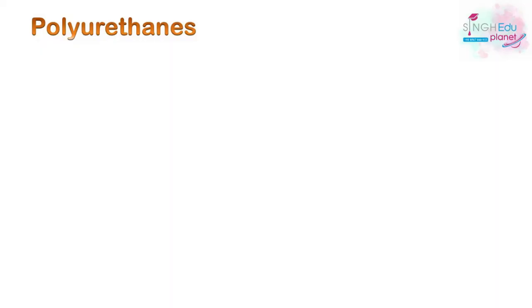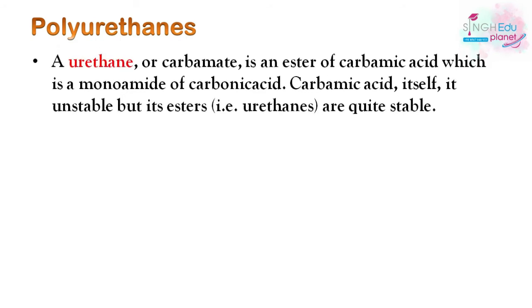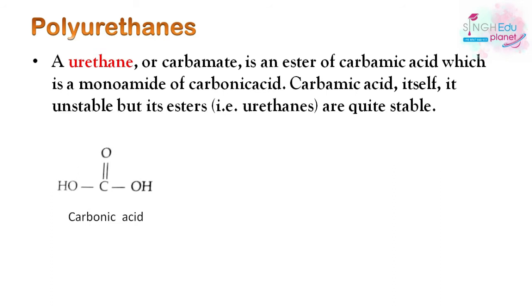The last topic is polyurethanes, which is an important topic. Urethane or carbamate is an ester of carbamic acid, which is the monoamide of carbonic acid. Carbonic acid has the structure with C=O and OH groups on both sides.